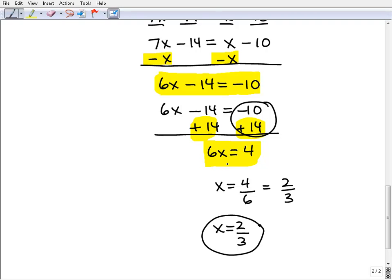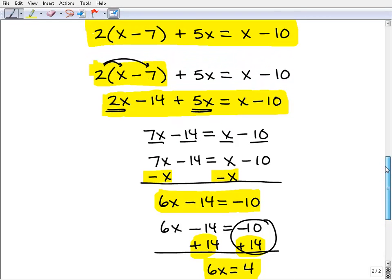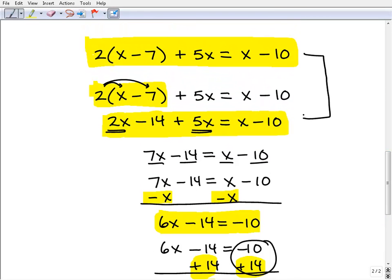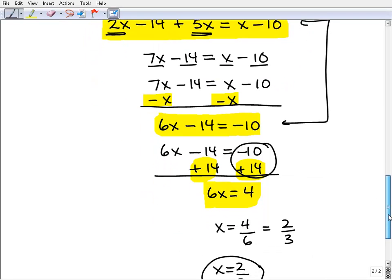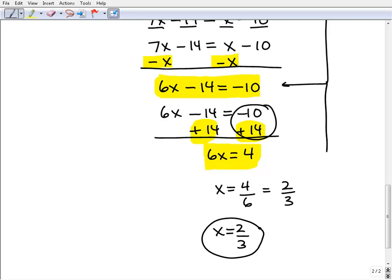So now finally we have taken our original problem, okay, and we just kind of continue to rewrite it as a series of easier and easier problems till finally we get down to this basic one-step equation. So we're down to 6x equals 4, and to solve that we're going to go ahead and divide both sides of the equation by 6.